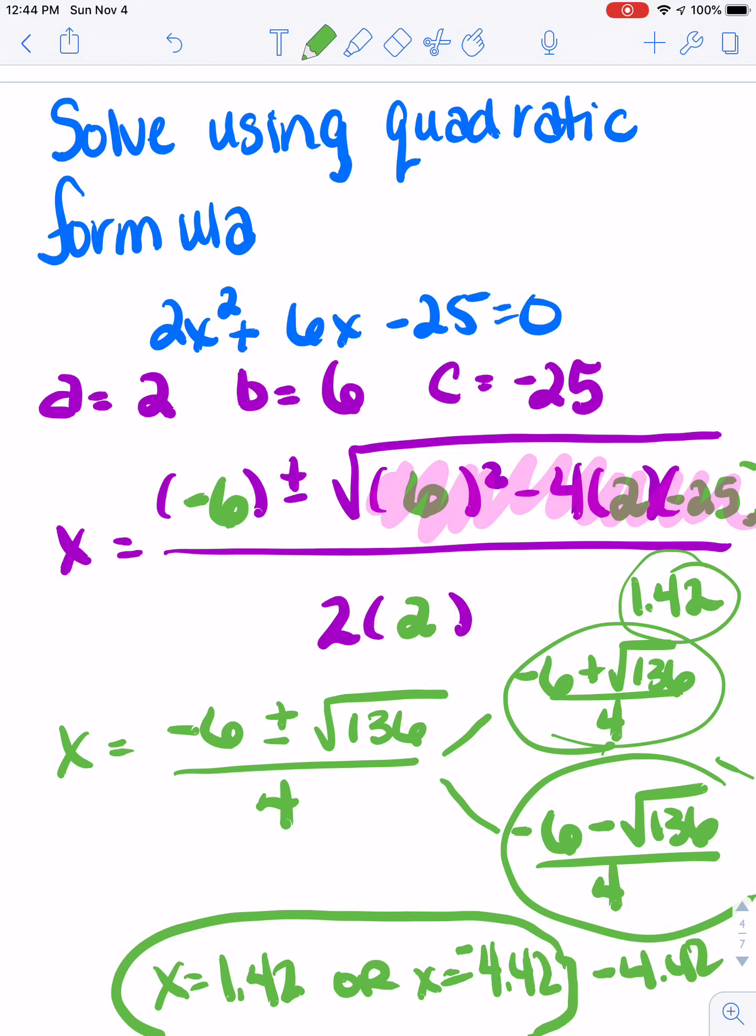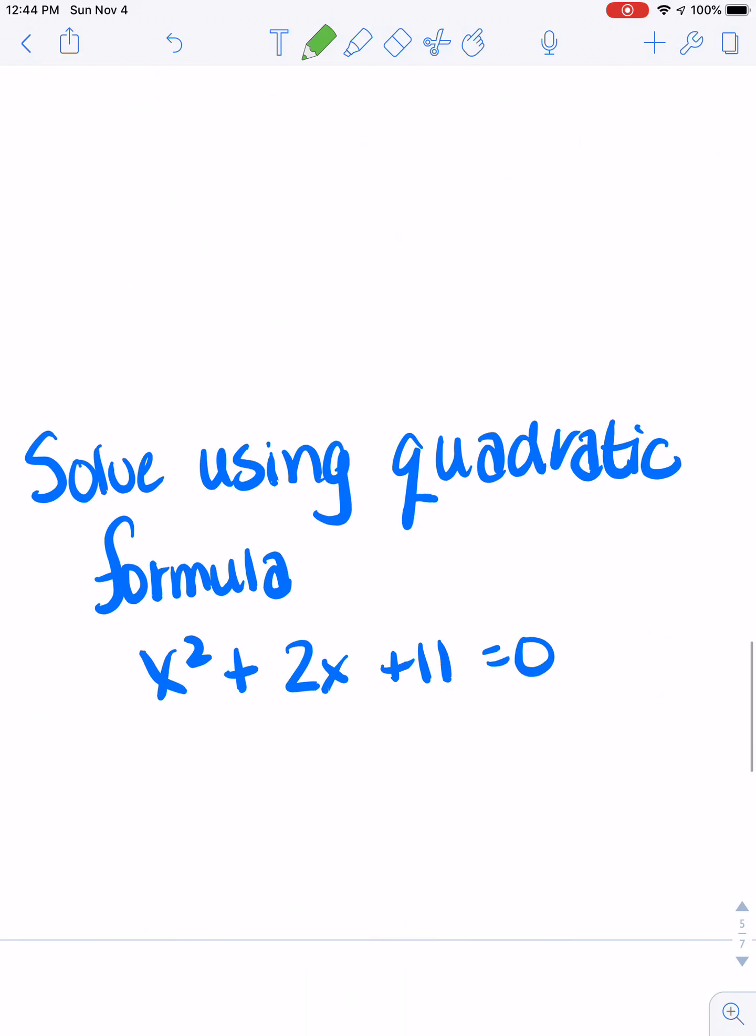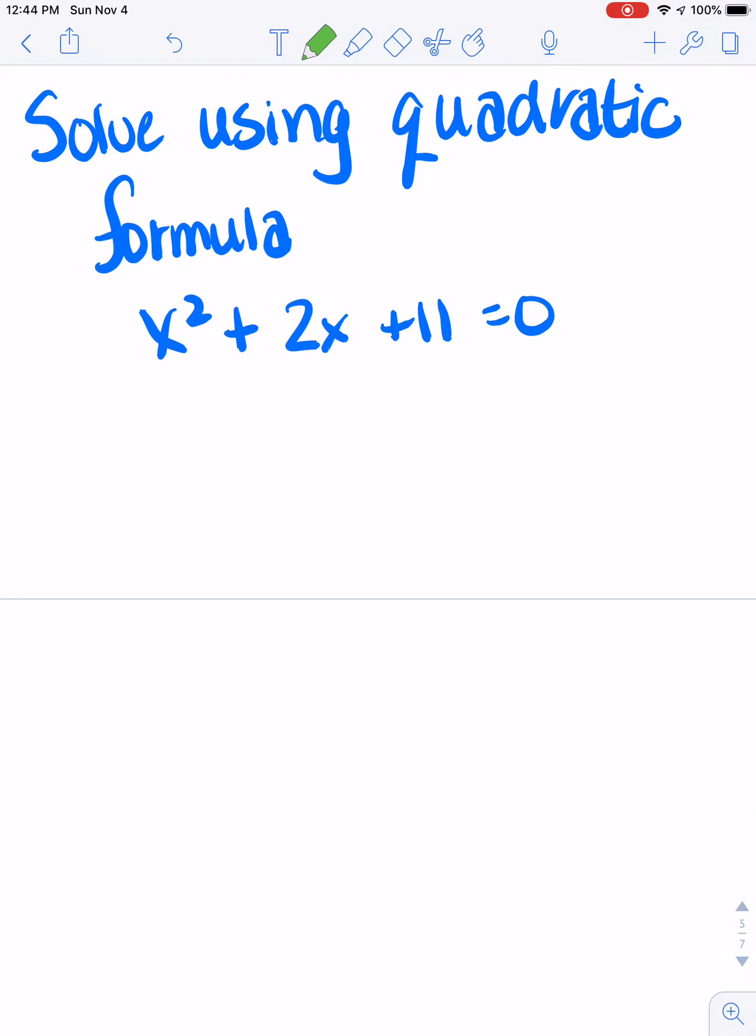Okay, let's try one more. In this one, I want to show you what it looks like when you have stuff that's imaginary. So here is my problem that I have, x² + 2x + 11 = 0. So because I assume there's a 1 there, a = 1, b = 2, and c = 11.